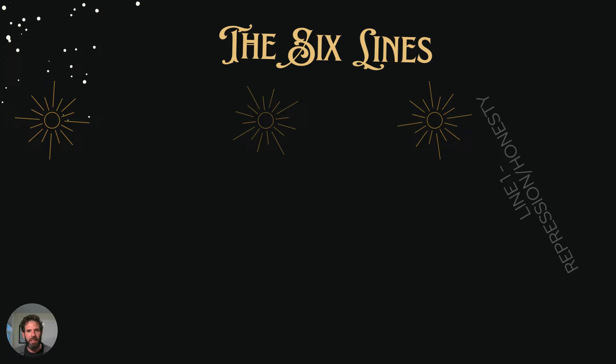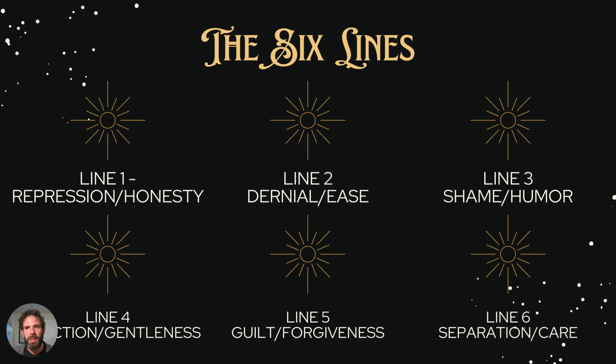And finally, we have the six lines of the Venus sequence — specifically the six lines of the core. Line one is a deep fear of not existing — repression. This deep fear of not being, of something going wrong. The solution to that is honesty: being honest with yourself and honest with the world. Again, though, you can extrapolate these to every sphere of the Venus sequence and of the whole profile.